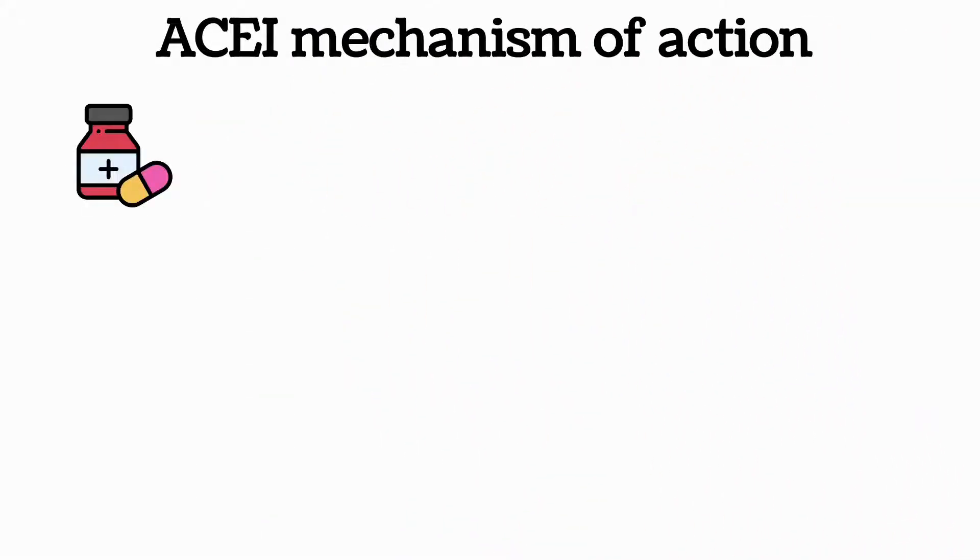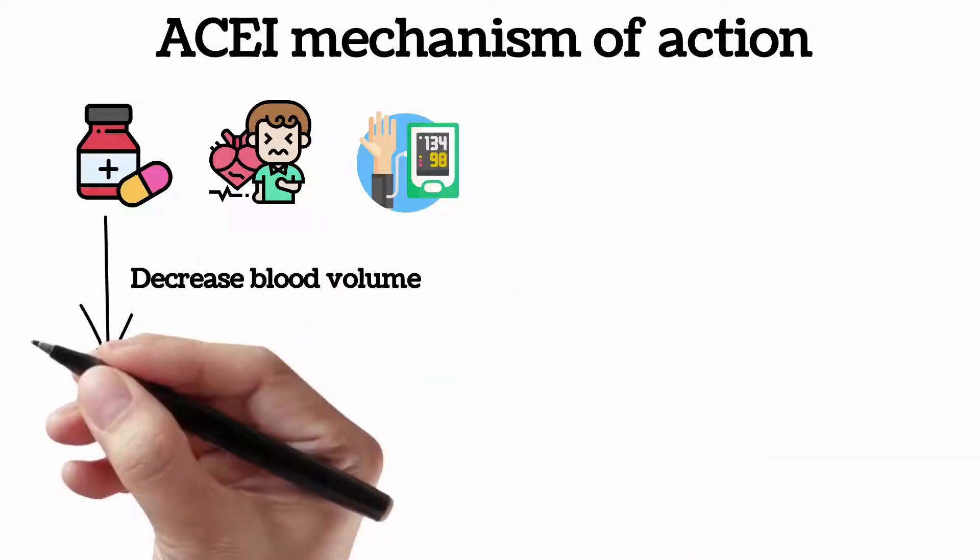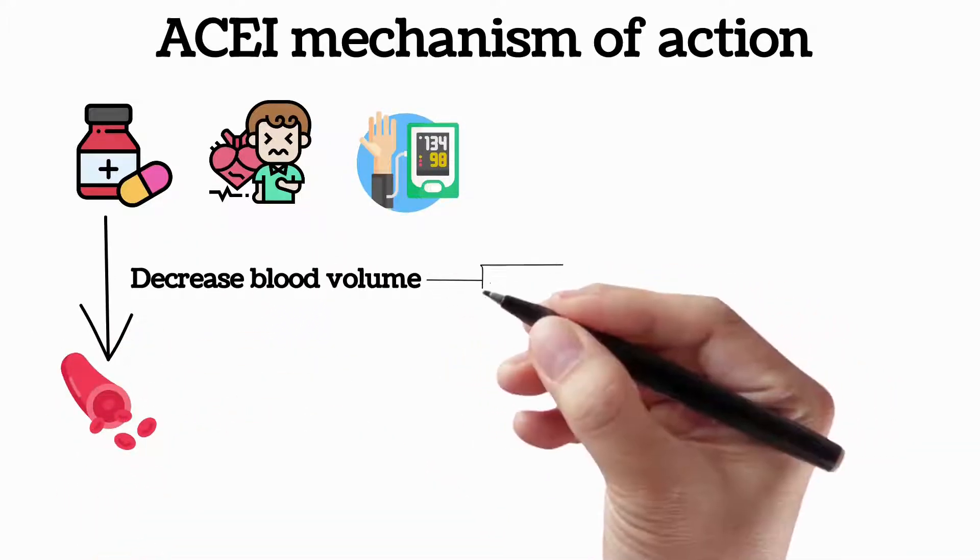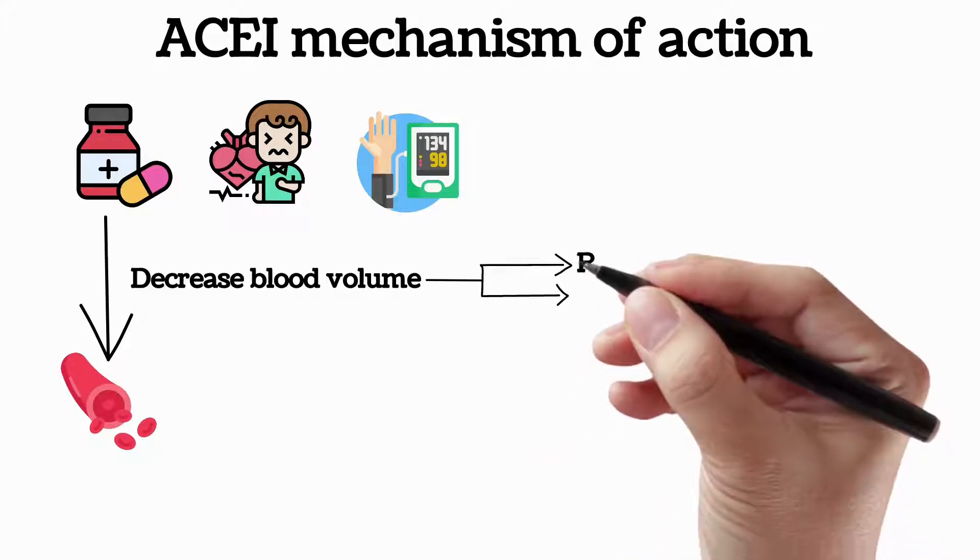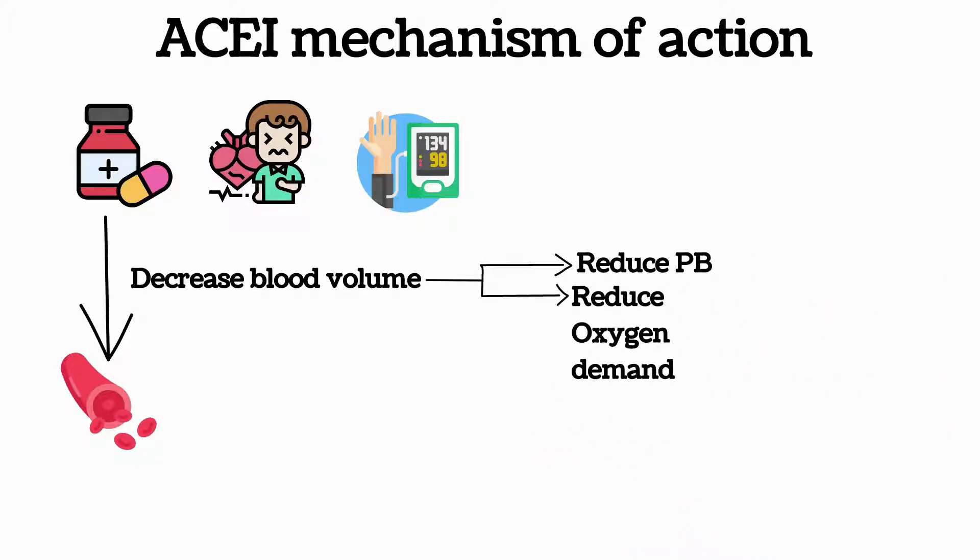Angiotensin-converting enzyme inhibitors are a class of medication used primarily for the treatment of high blood pressure and heart failure. They work by causing relaxation of blood vessels as well as a decrease in blood volume, which leads to lower blood pressure and decreased oxygen demand from the heart.